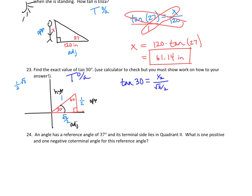When dividing fractions, we keep the top fraction the same — 1/2 — and multiply by the reciprocal: 2 over root 3. Multiplying straight across gives 2 over 2 root 3. The 2's reduce to 1, leaving us with 1 over root 3. But we can't leave a root 3 in the denominator, so we rationalize by multiplying numerator and denominator by root 3. 1 times root 3 is root 3, and root 3 times root 3 is root 9 which is 3. So tangent of 30 equals root 3 over 3.